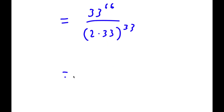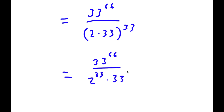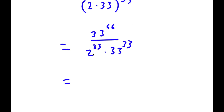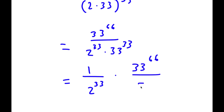This is the same thing as 33 to the power of 66 over 2 to the power of 33 times 33 to the power of 33. Now if I take out the 2 to the power of 33, I have 1 over 2 to the power of 33 times 33 to the power of 66 over 33 to the power of 33.